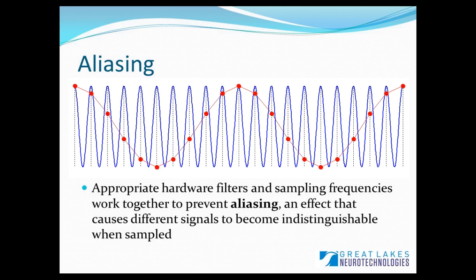This phenomenon, when different signals become indistinguishable, is called aliasing. Here we have a higher frequency continuous sinusoid, shown again in blue. When we sample this signal with a frequency that's too low, the digitized signal can end up looking like a totally different sine wave of a lower frequency.